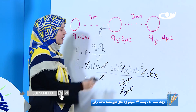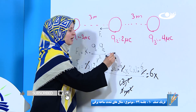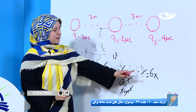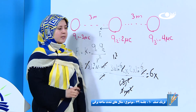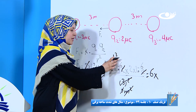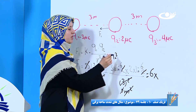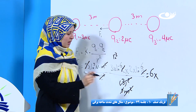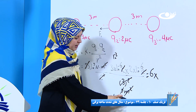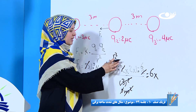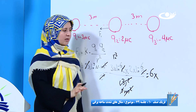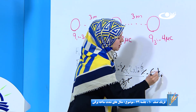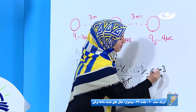۱۰ به توان منفی ۶ می‌شه ۱۰ به توان ۳. ۱۰ به توان منفی ۶ هم در این قسمت داریم. ۱۰ به توان ۳ و ۱۰ به توان منفی ۶ می‌شه ۱۰ به توان منفی ۳. در مخرج ما کدام عدد توان‌دار را نداریم، پس توان نهایی ما می‌شه ۶ ضرب ۱۰ به توان ۳.